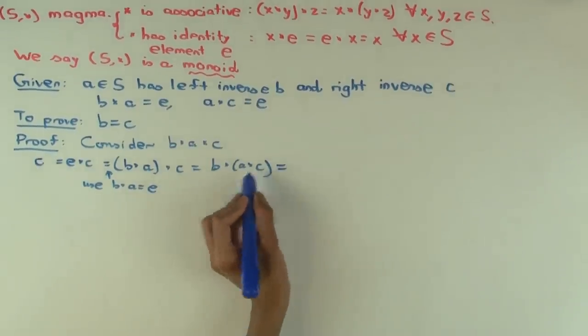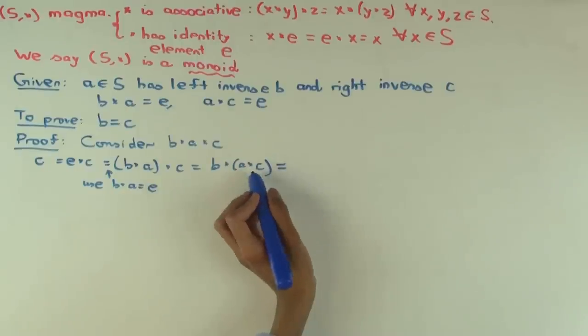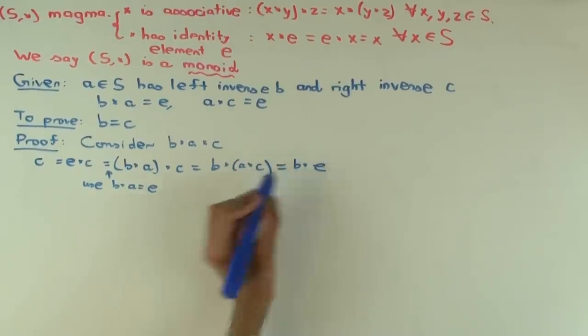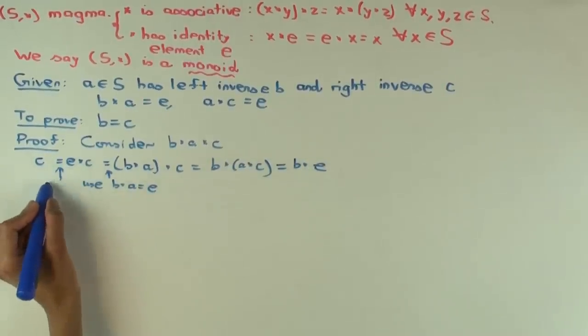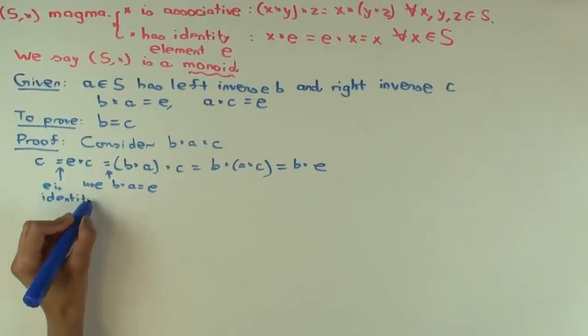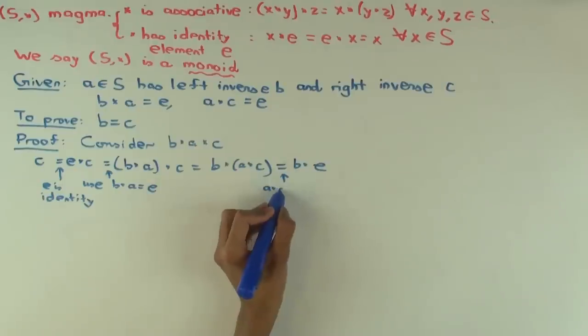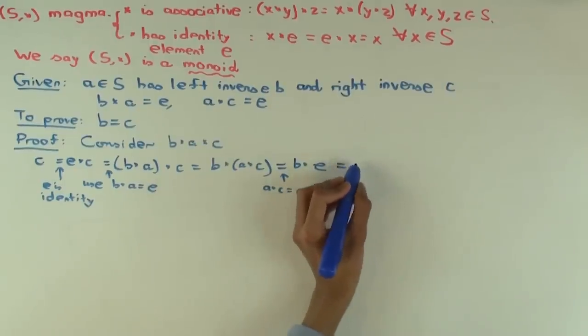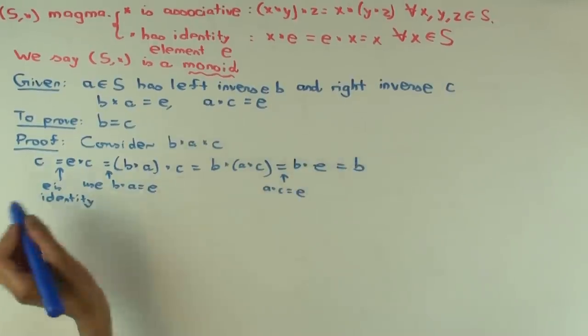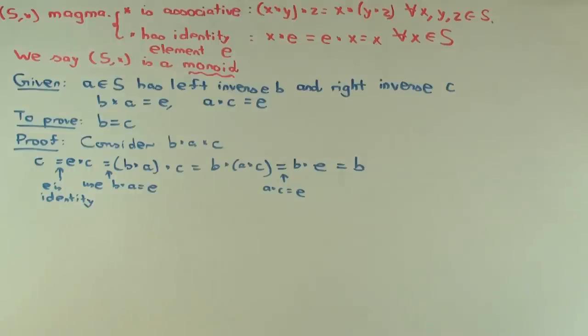Okay, what about the other side? So B times A times C, what does that simplify to? B star E. So this uses E as identity here. And this uses A star C equals E. And now B star E simplifies to B. So we get B equals C. Okay, great.